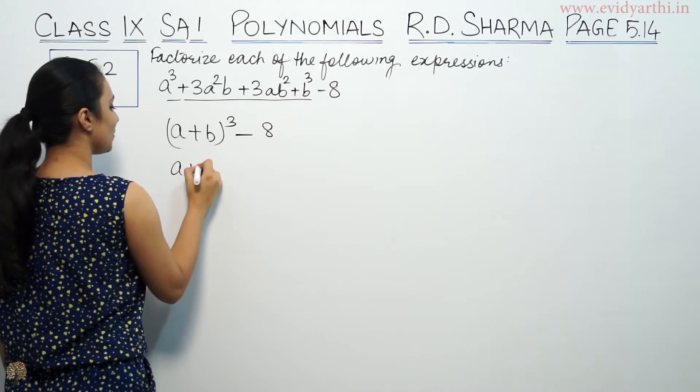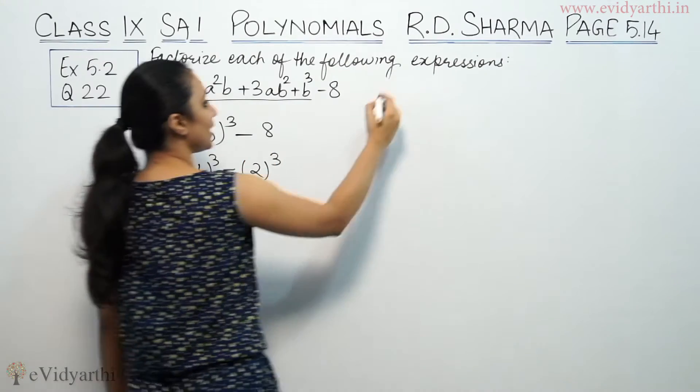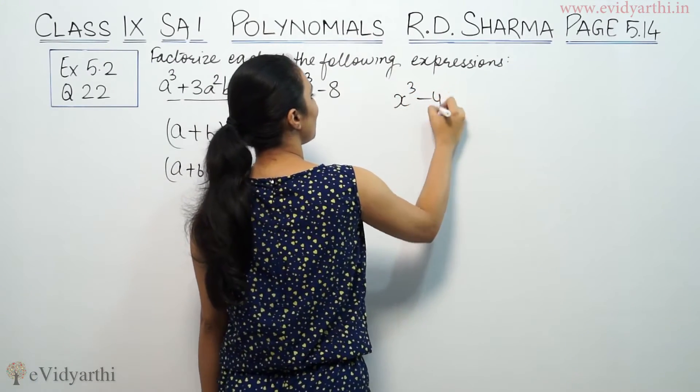So we can write (a + b)³ minus, this is 2³. Now, we have a formula of x³ - y³.